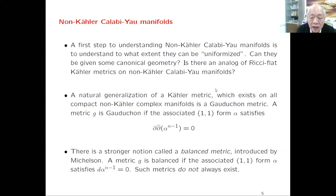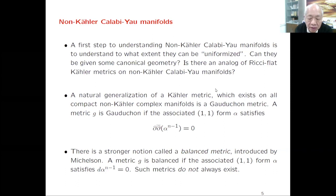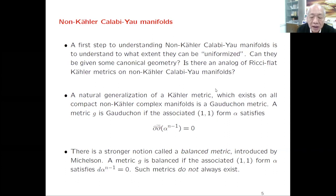It turns out any complex manifold admits such a metric by simply doing a conformal deformation on alpha. So there is an abundance of such metrics. This of course means you impose less constraint on the manifold for the existence of it, because every complex manifold admits such a metric.